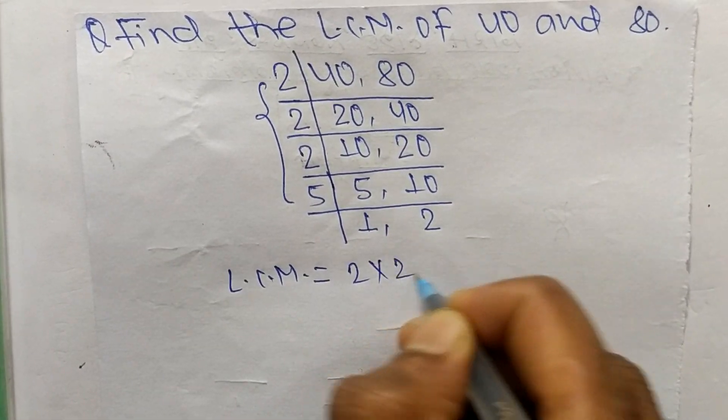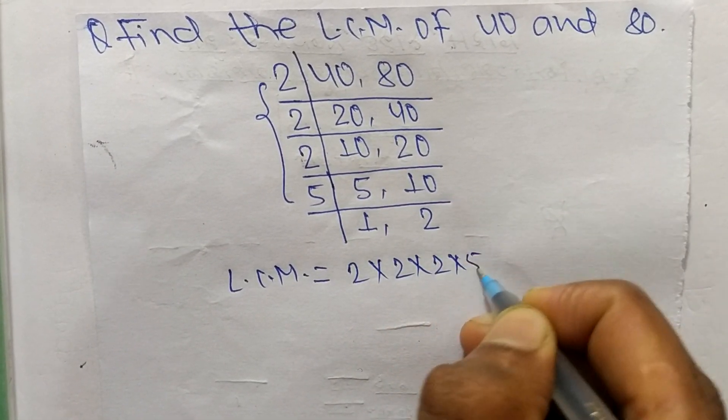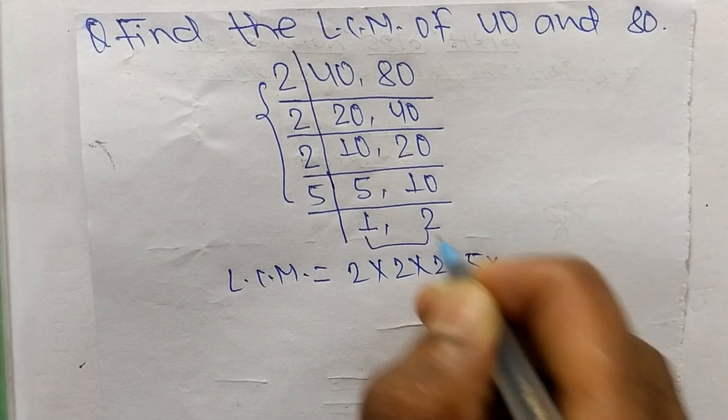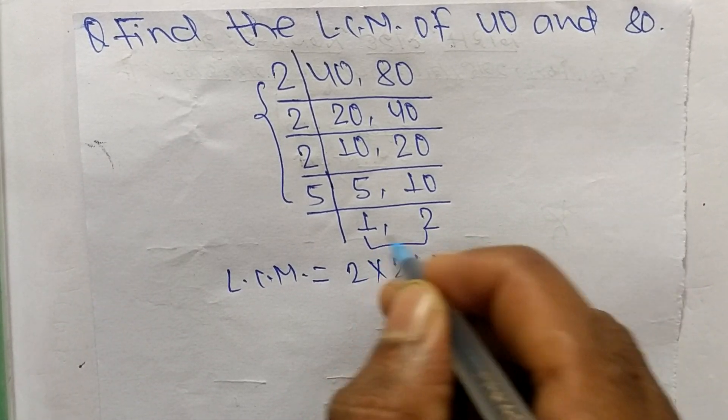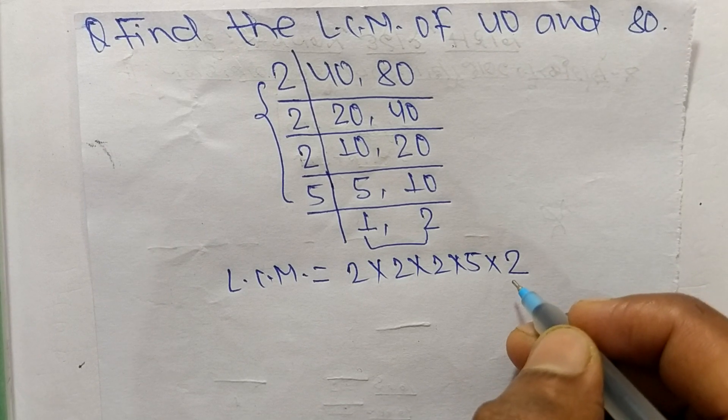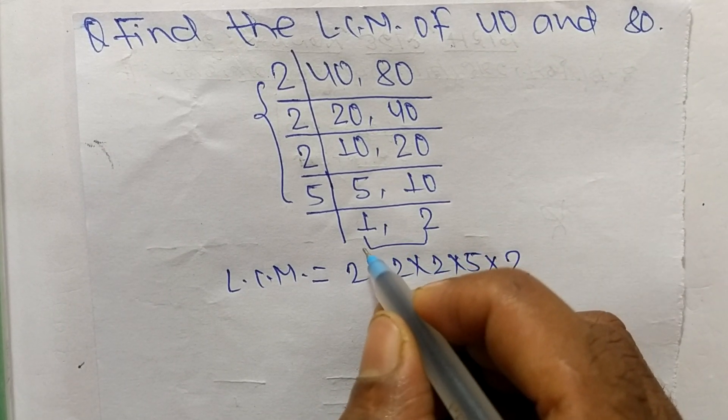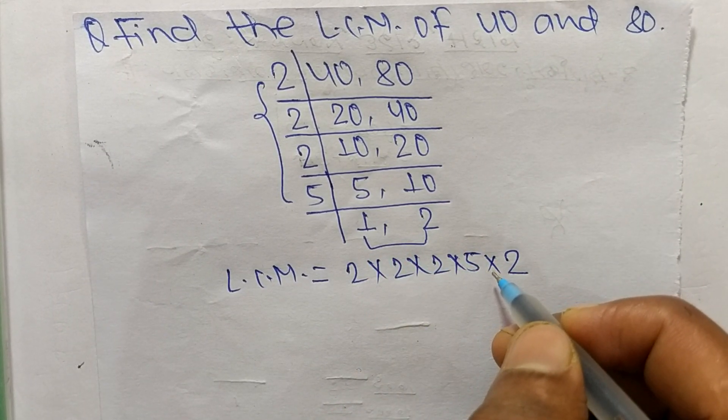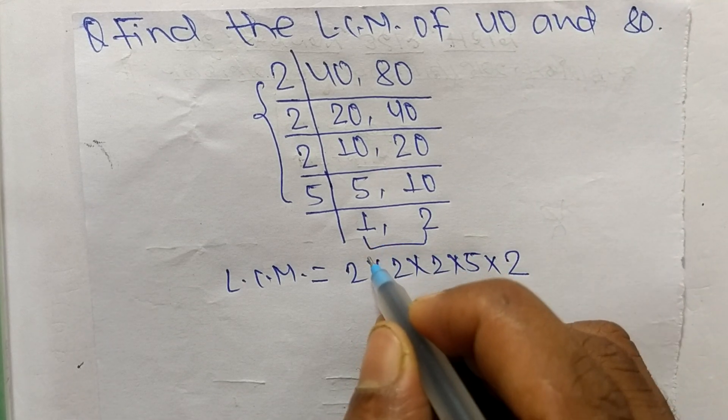And from this part we have 1 and 2, but we take here only 2 and we neglect 1, because by multiplying any number with 1 we get the same result.